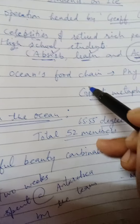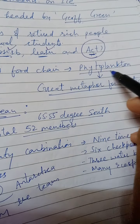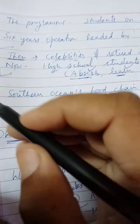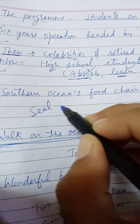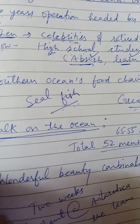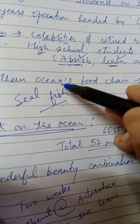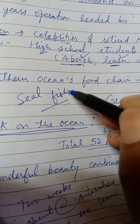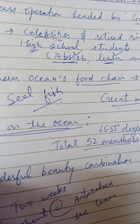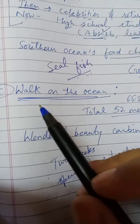It is also told in Part 2 about the southern ocean food chain — phytoplankton as a great metaphor for existence, and seal fish. This covers the food chain system of sea animals and birds in the Antarctic region.